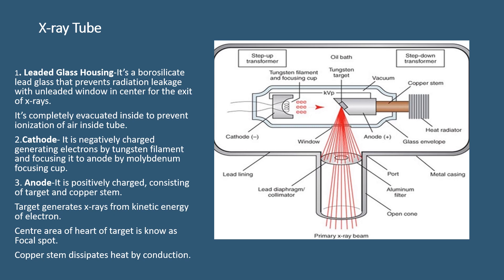The cathode has a negative charge and has two parts: the tungsten filament and the focusing cup, which is made up of molybdenum. The function of the cathode is to generate electrons by the tungsten filament and focus them toward the anode by the focusing cup.